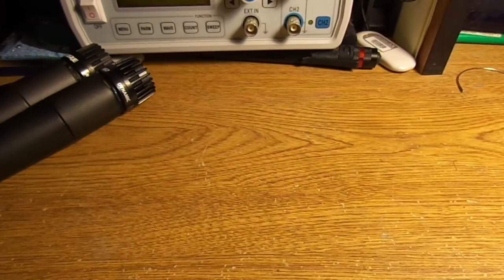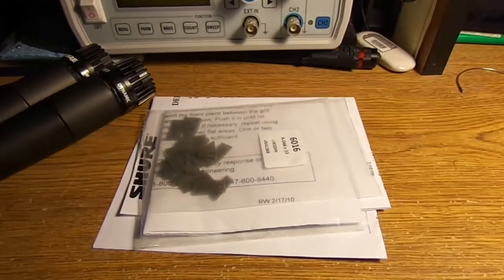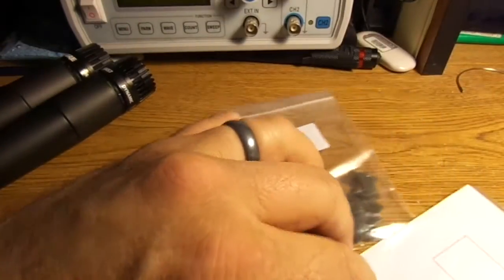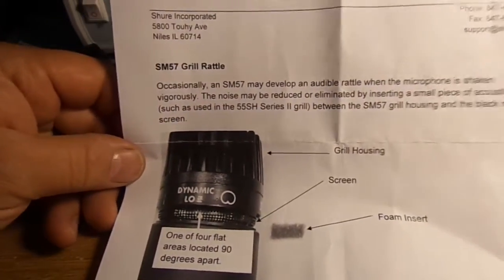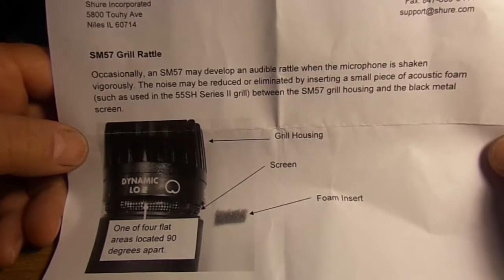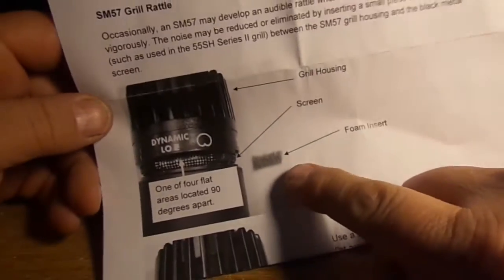So what you get is a package from Shure like this. And inside they give you these foam strips. So inside they'll tell you it's M57 grill rattle. And they'll tell you it may develop audible rattle when the microphone is shaking vigorously. Well, this is the little piece of foam that they send you.